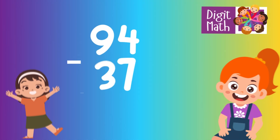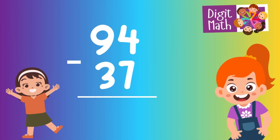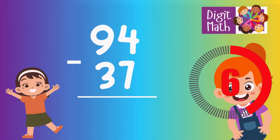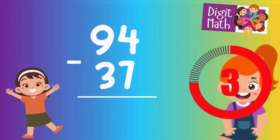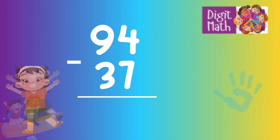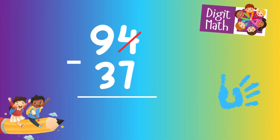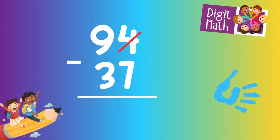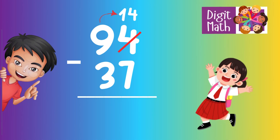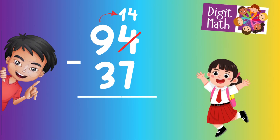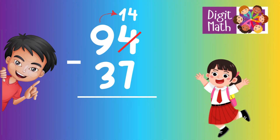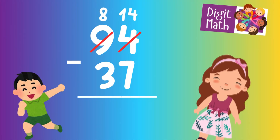94 minus 37 is... Time to think. Let's go to the answer. In the Units column, we have 4 minus 7. Since it's not possible to subtract 7 from 4, we need to borrow from the Tens column. In the Tens column, we have 9. We take 1 from the Tens, leaving 8 in the Tens column and turning the Units column into 14.